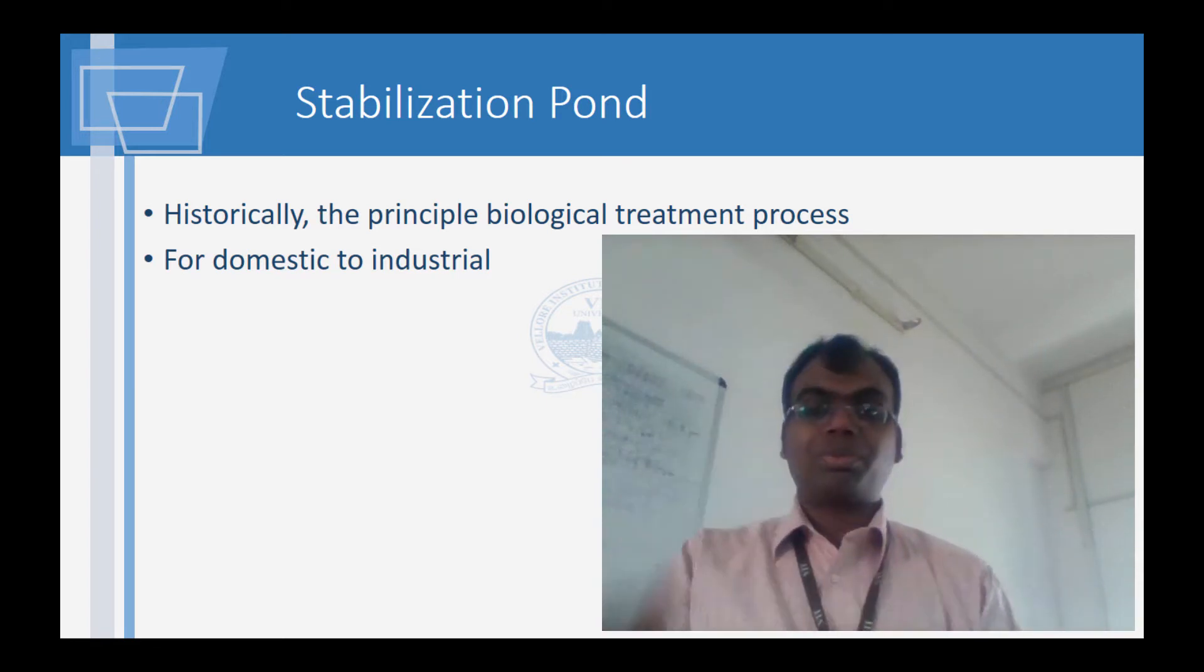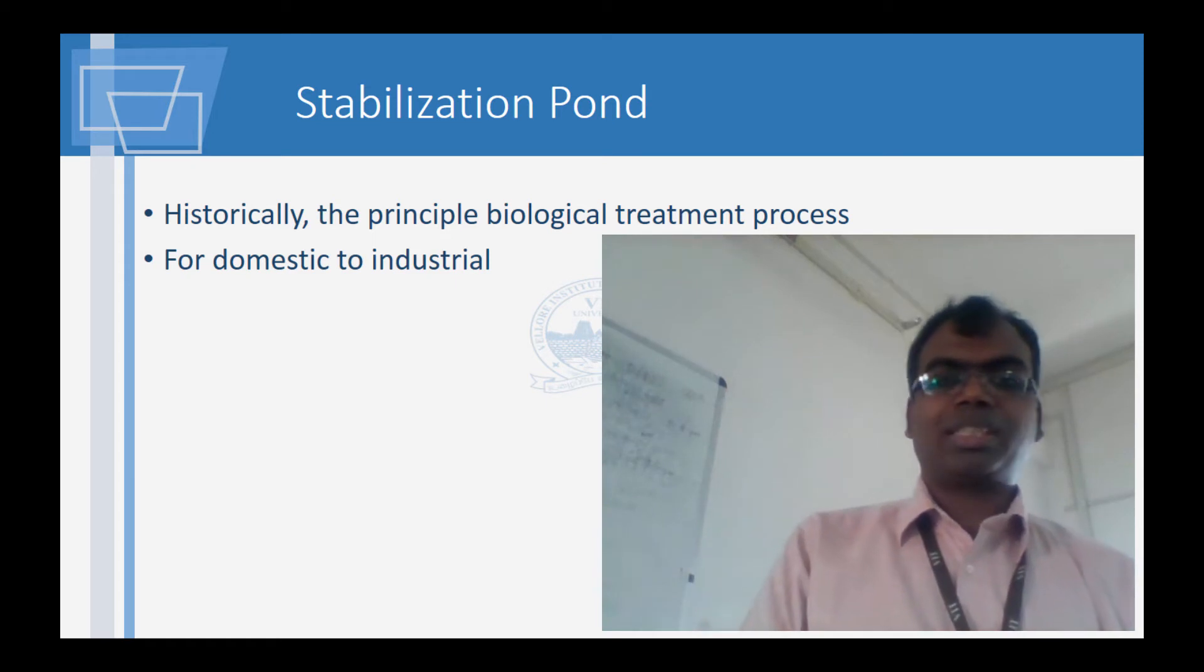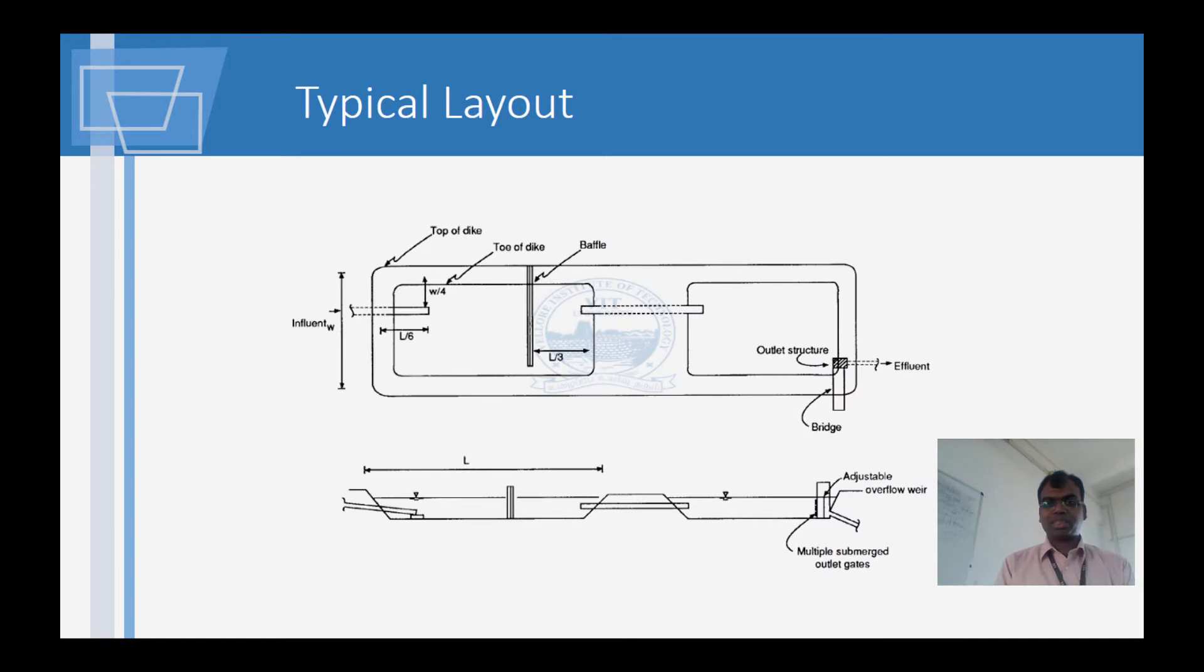Stabilization ponds are used both for industrial as well as for domestic waste. And ideally this is also an aerobic process. They even call it an oxidation pond. This is a typical layout where you have the influent brought in here. And there is a baffle wall so that things just do not go as they like.